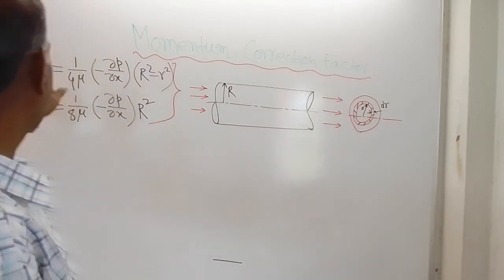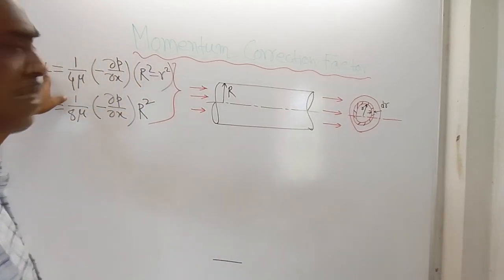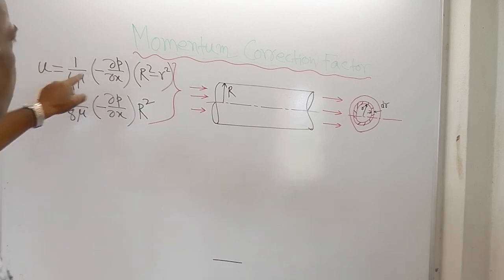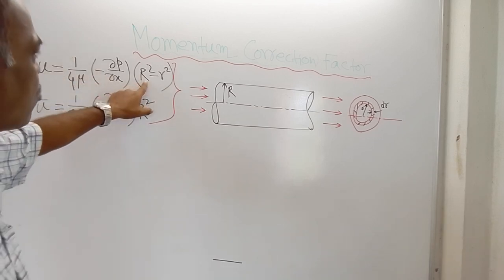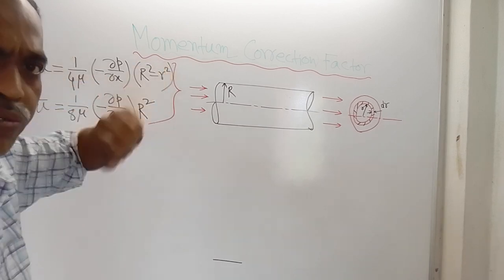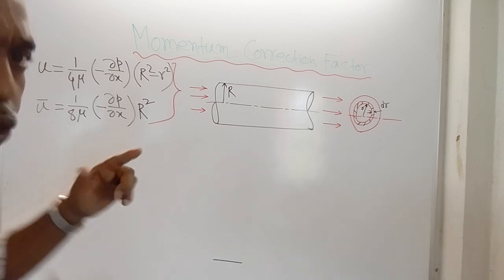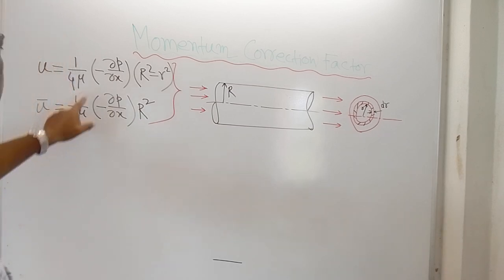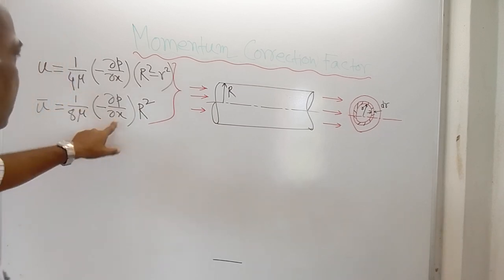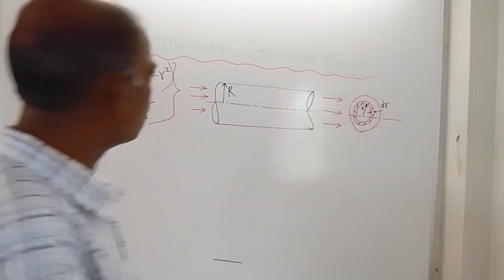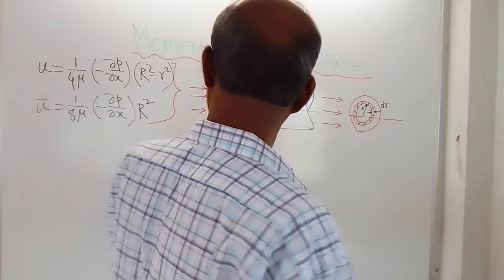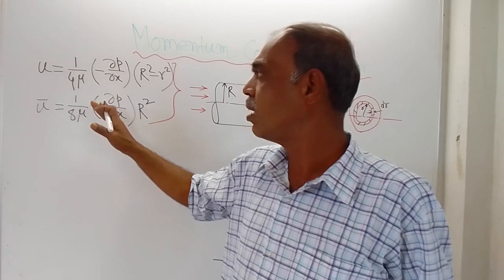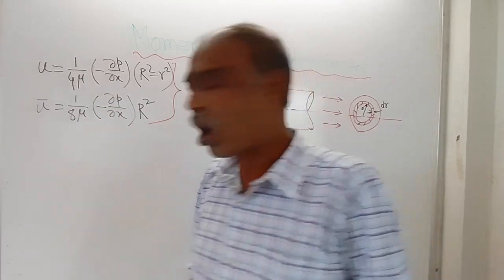The actual velocity u is equal to (1/4μ)(−∂p/∂x)(R² − r²). And the average velocity ū is equal to (1/8μ)(−∂p/∂x)(R²). So this is the actual velocity and this is the average velocity.